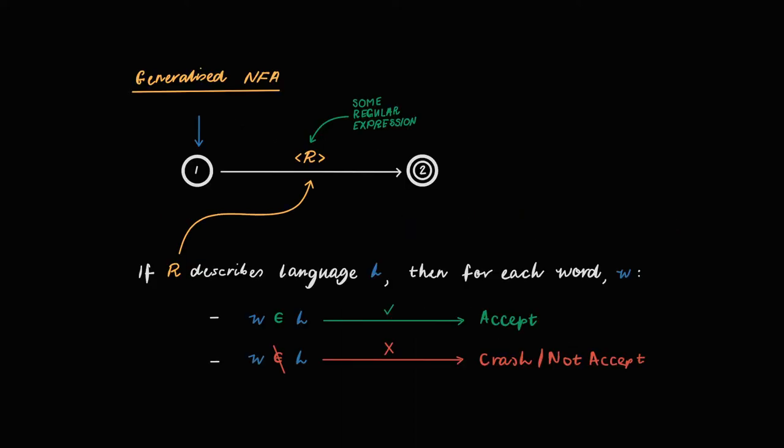Here's an example of a generalized NFA that recognizes the regular language described by R, which is just some arbitrary regular expression. If we read a word that belongs to this language, then we can move from the start state on the left along the single transition labeled by R and arrive at the accept state on the right.